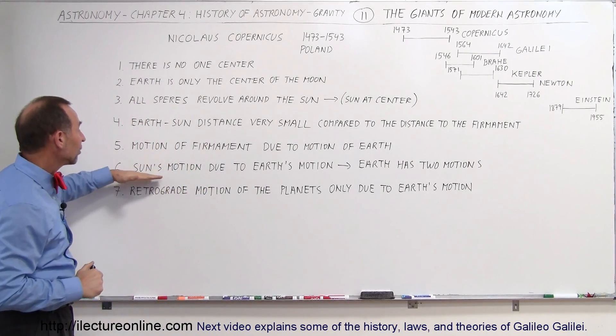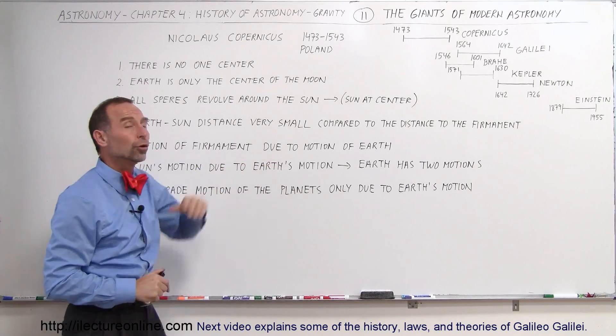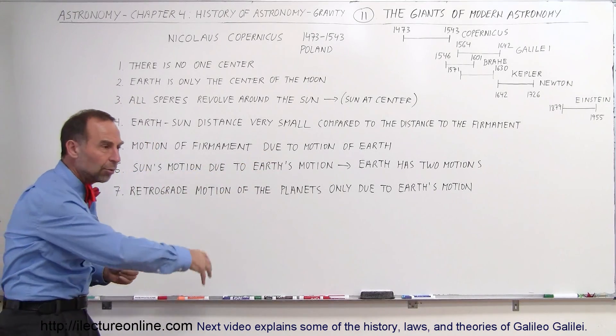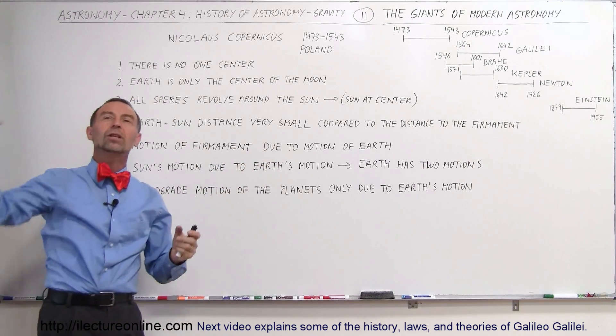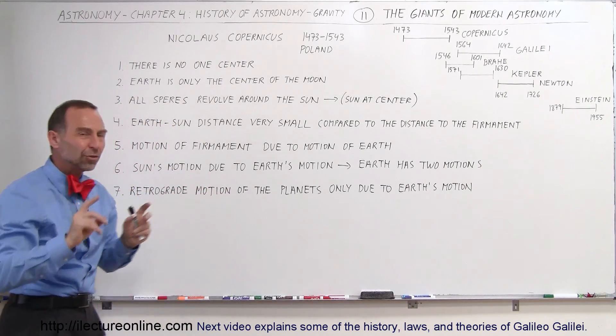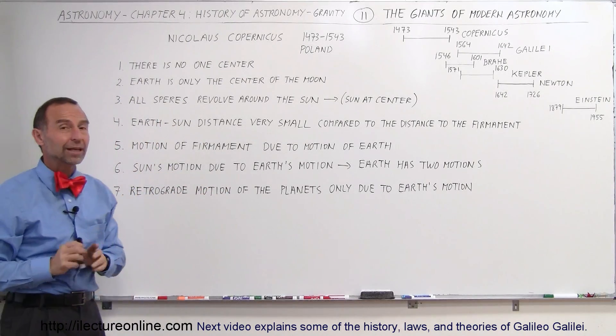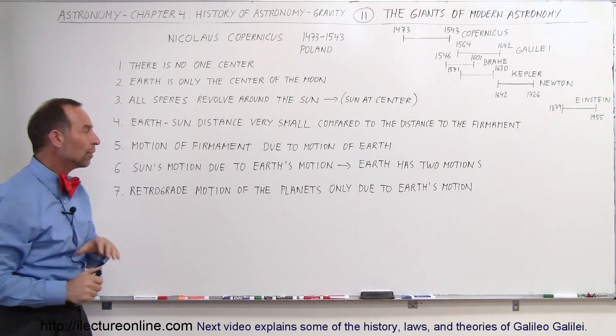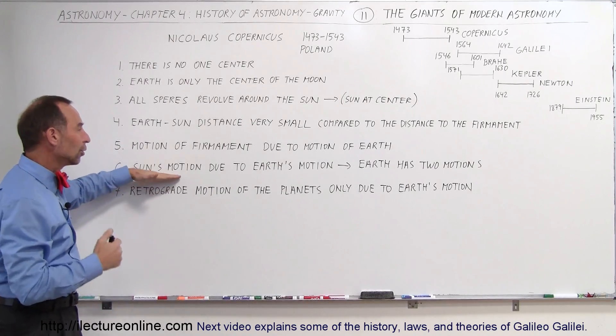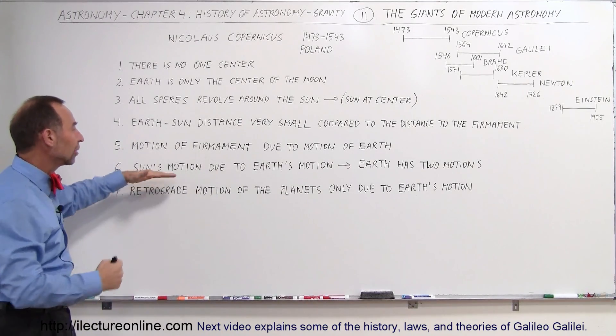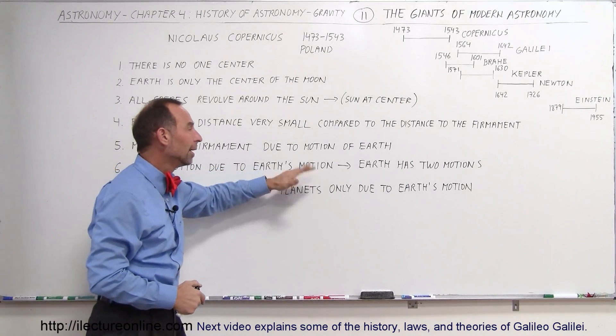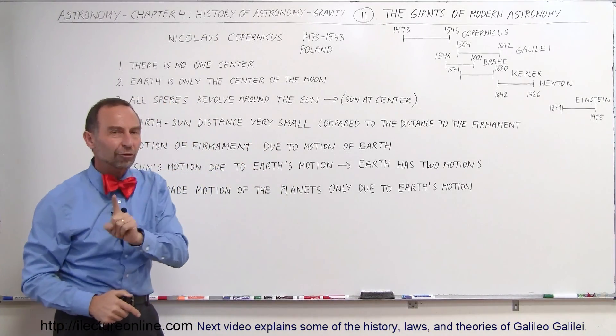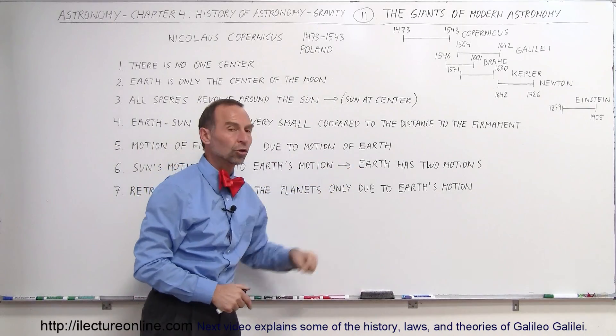And then he said that the sun's motion due to the Earth is also due to the Earth's motion. The idea that the sun revolved around the Earth, that it rose in the east, sets in the west, that wasn't because the sun was moving, that was because the Earth was moving. It was some motion that the Earth had that caused the sun to look like it's moving, so the sun's motion is due to the Earth's motion. And then he concluded the Earth, therefore, has two motions.